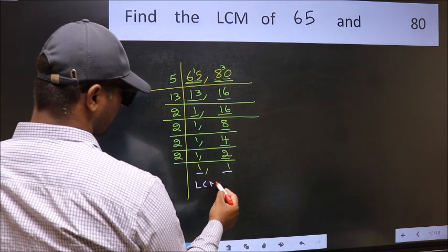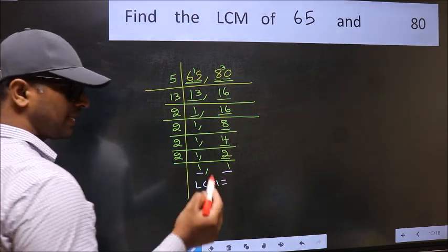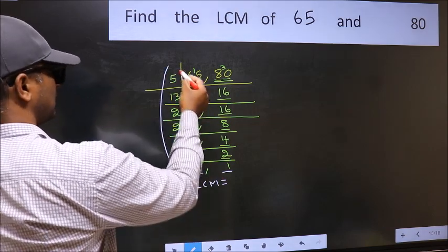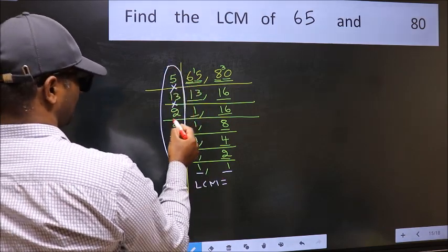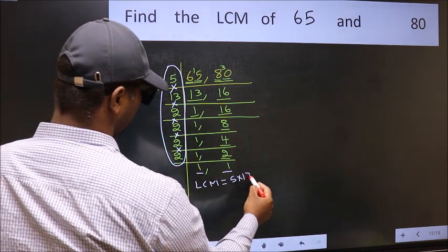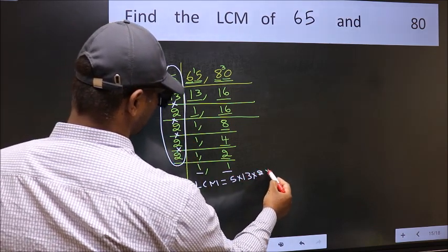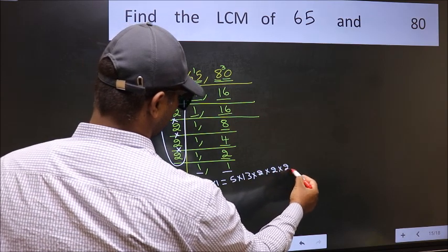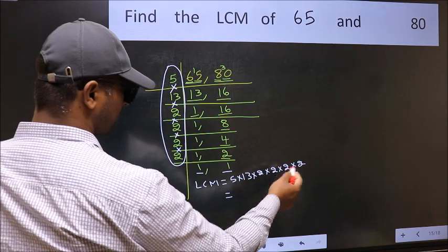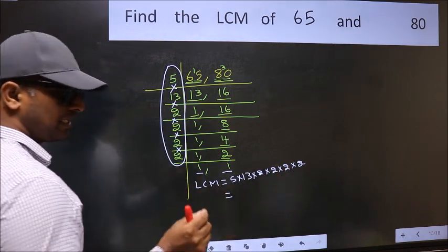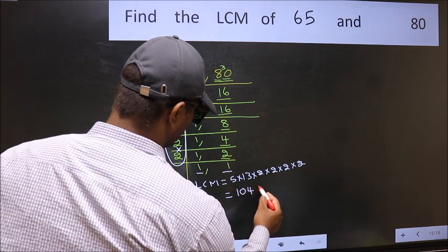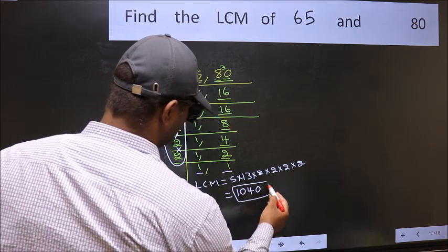So our LCM is the product of all these numbers: 5 into 13 into 2 into 2 into 2 into 2. When we multiply these numbers, we get 1040. So the LCM of 65 and 80 is 1040.